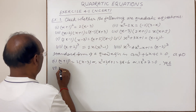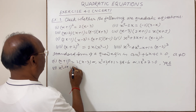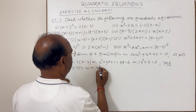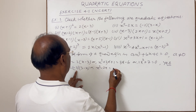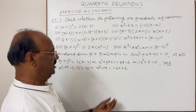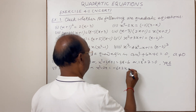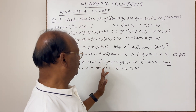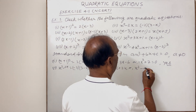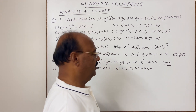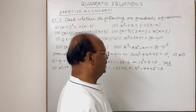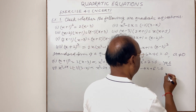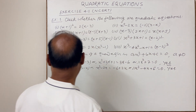Second equation: x² − 2x = −2(3 − x). The left-hand side is x² − 2x and the right-hand side is −6 + 2x. Transposing to the left: −2x − 2x = −4x and −6 becomes +6, giving x² − 4x + 6 = 0. Since a = 1 ≠ 0, this is also a quadratic equation.